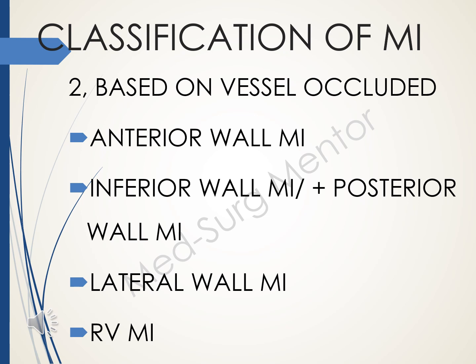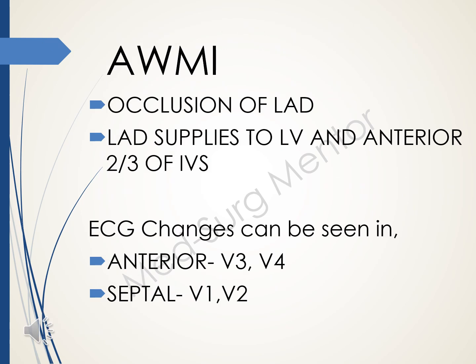Classification based on vessels occluded includes anterior wall MI, inferior wall MI, posterior wall MI, lateral wall MI, and right ventricular MI. In anterior wall MI, there is occlusion of the left anterior descending coronary artery, which supplies the left ventricle and anterior two-thirds of the interventricular septum. ECG changes can be seen in anterior leads V3, V4, and septal leads V1 and V2.